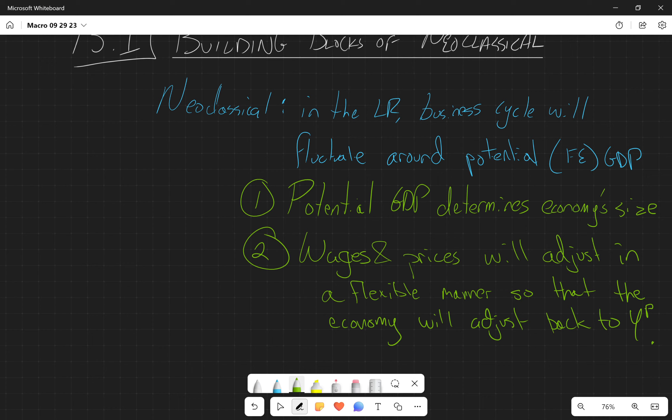So again, the classical economists are focused on the long run. Over the long run, the potential GDP determines the economy's size. And when we're talking about potential GDP, we're talking about the level of output that can be achieved when all of the resources are fully employed.